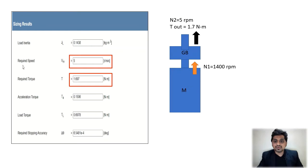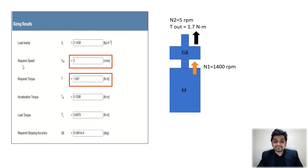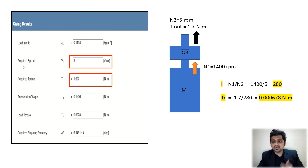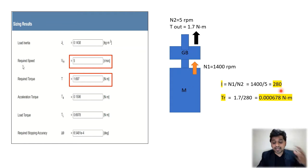The gearbox output delivers 5 RPM — our required speed N2 — while 1400 RPM is the gearbox input from the motor. The required torque is also obtained at the gearbox output shaft. The gear reduction ratio i = 1400 / 5 = 280. So we need to reduce the speed by 280 times.